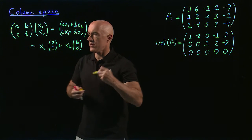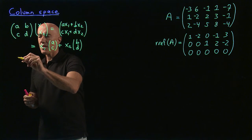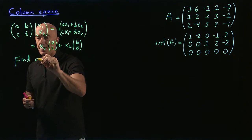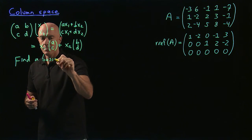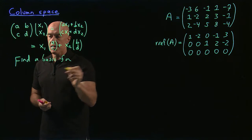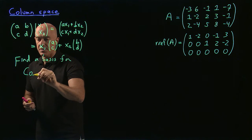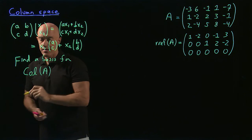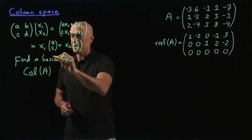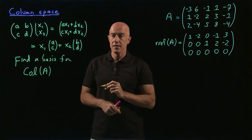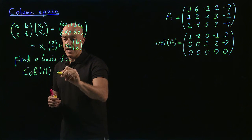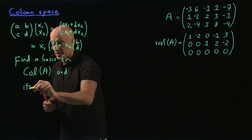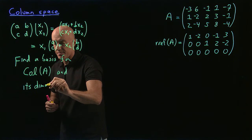So the question here is: we want to find a basis for the column space — I'm going to call the column space COL of A — find a basis for the column space of A and its dimension, the dimension of the column space.